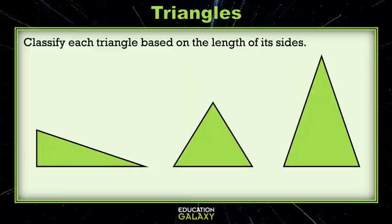Let's classify these triangles according to the lengths of their sides. In the first triangle, we have a short side over here. Then this side is a little bit longer, and this side is even longer. So they're all different. So that means this would be a scalene triangle.